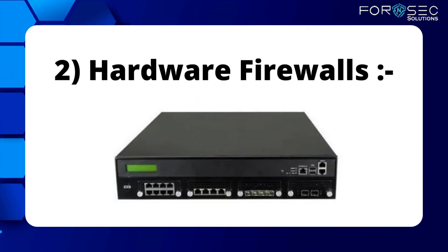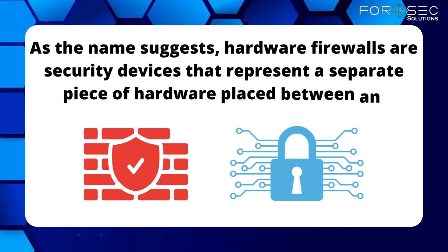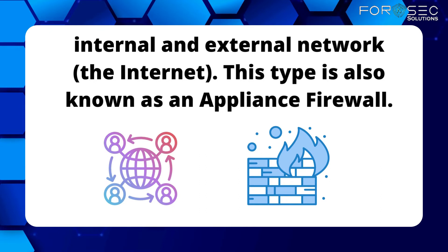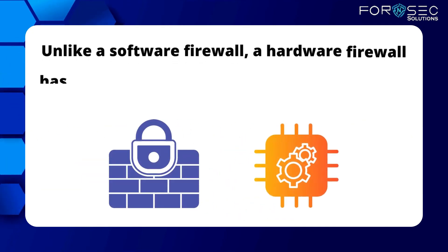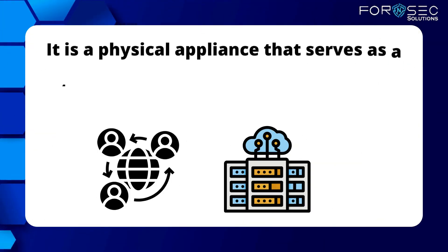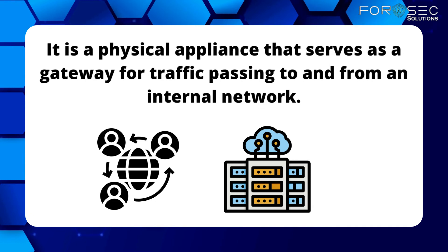What is a hardware firewall? As the name suggests, hardware firewalls are security devices that represent a separate piece of hardware placed between an internal and external network, that is the internet. This type is also known as an appliance firewall. Unlike a software firewall, a hardware firewall has its own resources and doesn't consume any CPU or RAM from the host. It is a physical appliance that serves as a gateway for traffic passing to and from the internal network.